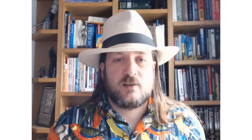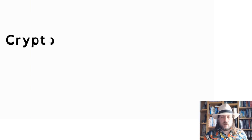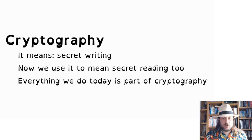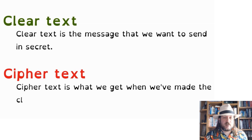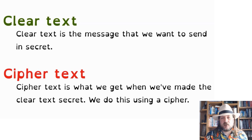I'm going to give you some new words to start this lesson. We'll be using them a lot so I want to make sure you remember them. The first word is cryptography, which means secret writing — we use it nowadays to mean secret reading as well. The next two terms are clear text and ciphertext. The clear text is the message we want to send in secret. A cipher is a way of making a message secret, so the ciphertext is the message that we can send any way we want and still have it be secret.